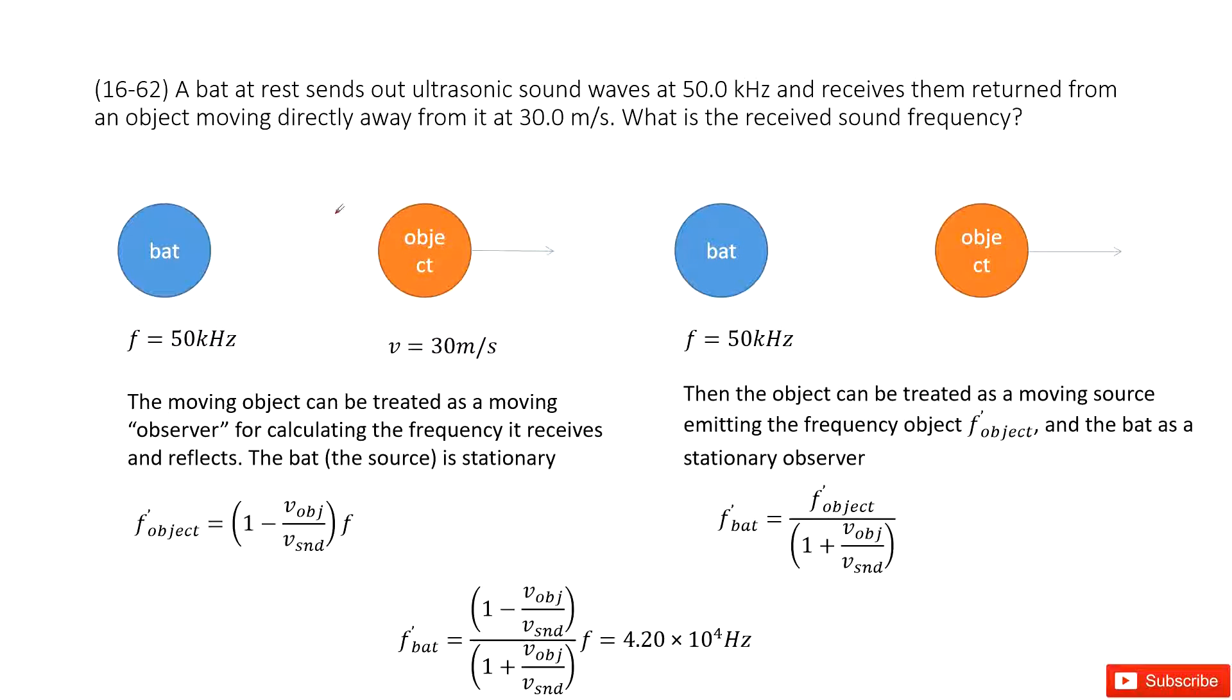There we talk about the Doppler effect. You can see we have two objects: one bat and another object. And the frequency for the source, the bat, is given at zero. And we know the object moves away from this bat at 30 meters per second.